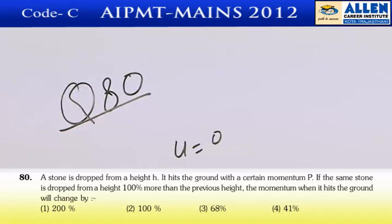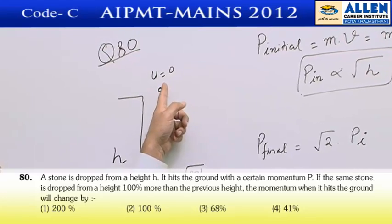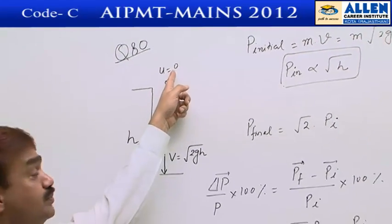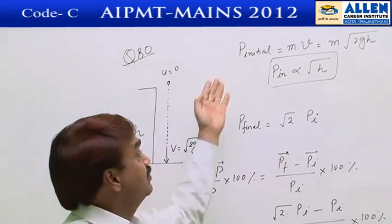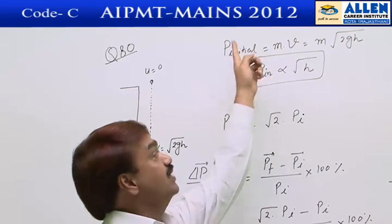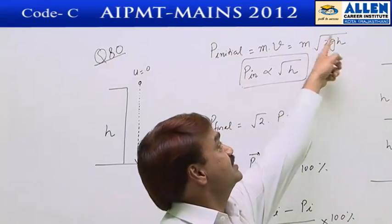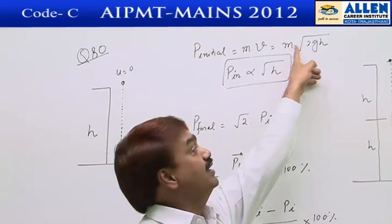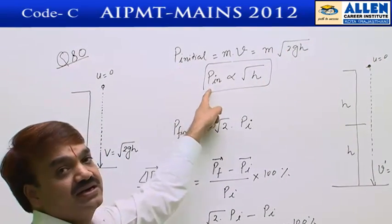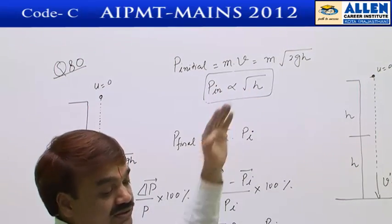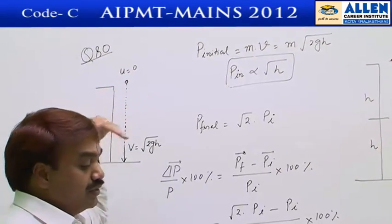Question number 80. A stone is dropped from height h. The initial velocity is 0 and the striking velocity is √(2gh). Momentum equals mass into velocity, so the initial momentum is proportional to √(2gh). Since mass, gravitational acceleration, and the factor 2 are all constants, the momentum is directly proportional to √h.